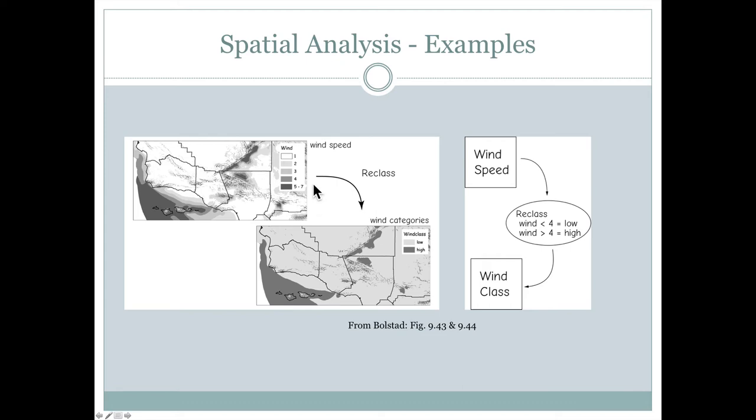In this example here, we can look at wind speed. The wind speed here is given as just a series of numbers. These could be grid cells that each have a number associated with it to represent the wind speed.